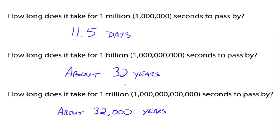But it would take about 32 years before you became a billionaire. So what does that mean? Well, that means Bill Gates has a hell of a lot of money, right? And it would take about 32,000 years before you became a trillionaire.